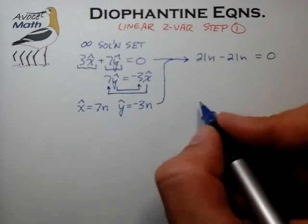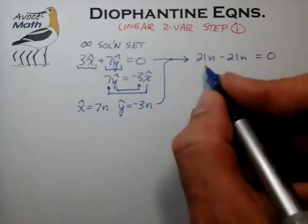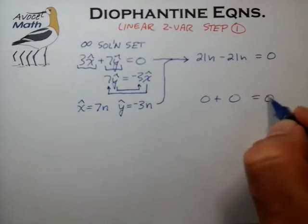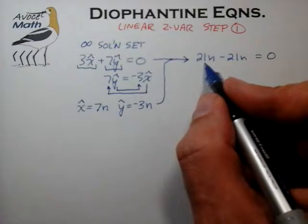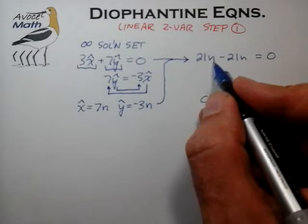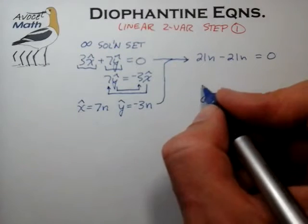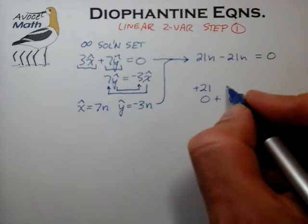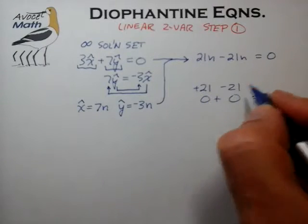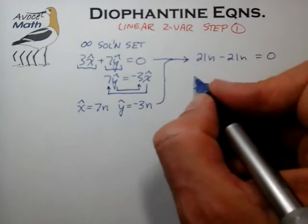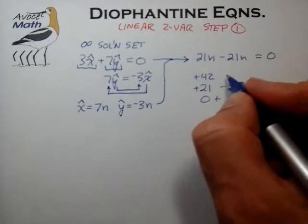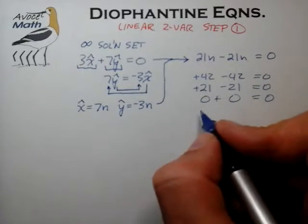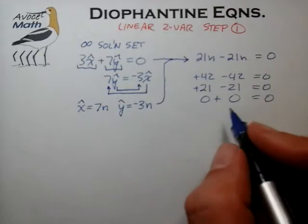We quickly realize that these two sum groupings will basically counterbalance each other and always sum to zero. In the case where n equals zero, these two terms simply add zero to zero to give zero. When n increases, we can form a positive 21 and then a negative 21, which again adds to zero — and likewise 42 minus 42 equals zero.